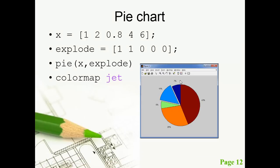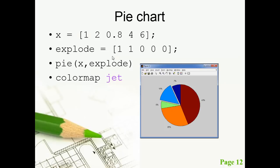Next one is the pie chart. It is a type of area plot. x is the array with values 1, 2, 0.8, 4, and 6. The 'explode' command is used with the pie chart. We use 'pie(x, explode)' which will indicate the pie color. The explode array uses a 1 to pull out one slice of the pie from the rest.